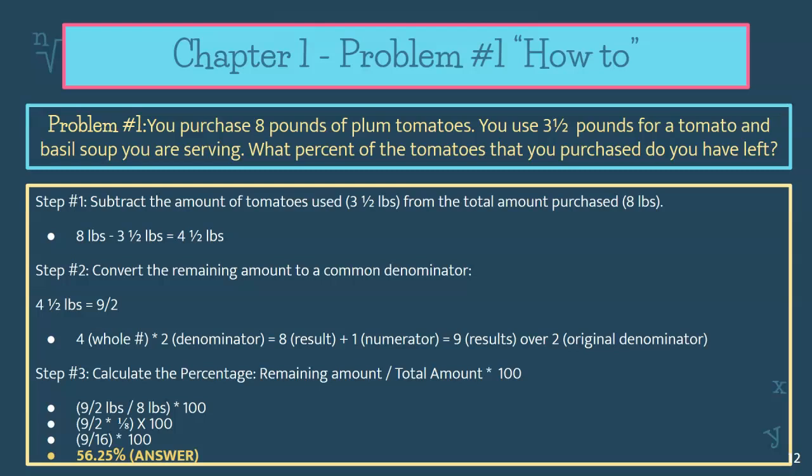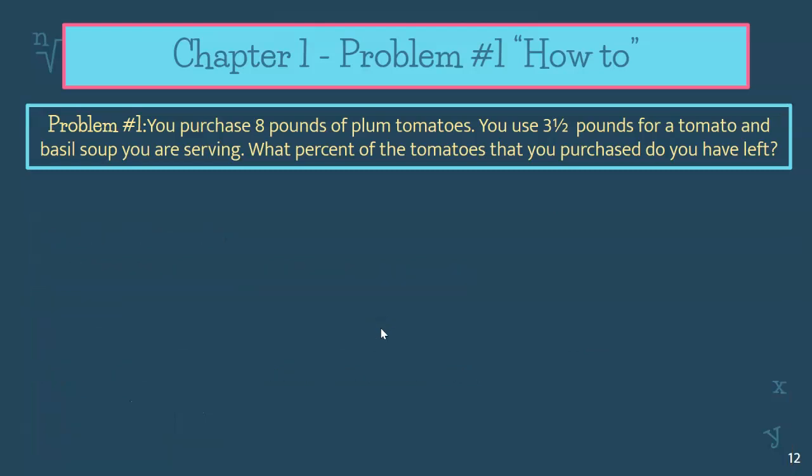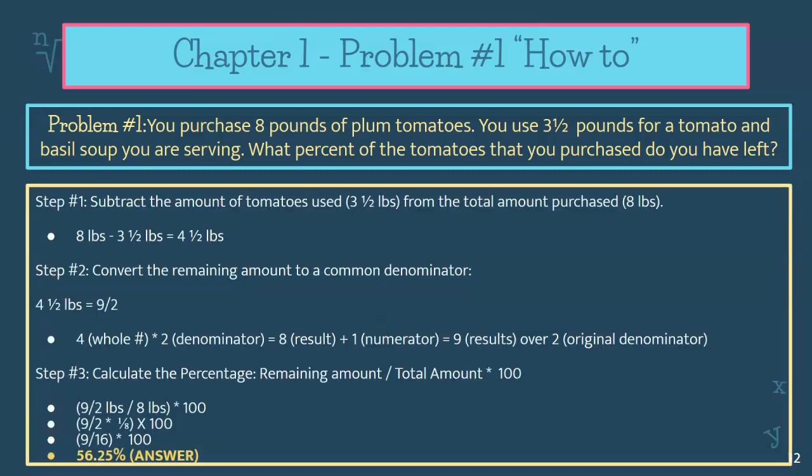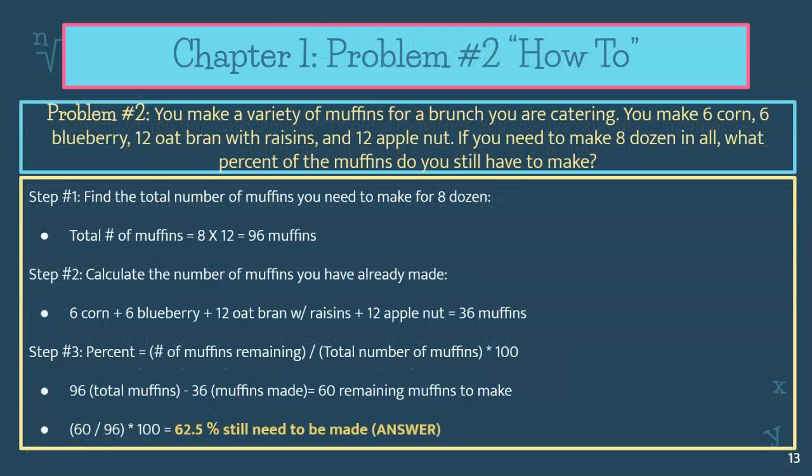Next we're going to go over chapter one, problem two. In this situation, we have muffins. You make a variety of muffins for a brunch you are catering — six corn, six blueberry, 12 oat bran with raisins, and 12 apple nut. If you need to make eight dozen in all, what percent of the muffins do you still have to make?